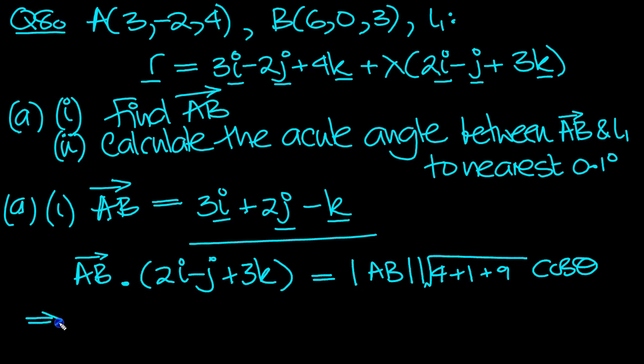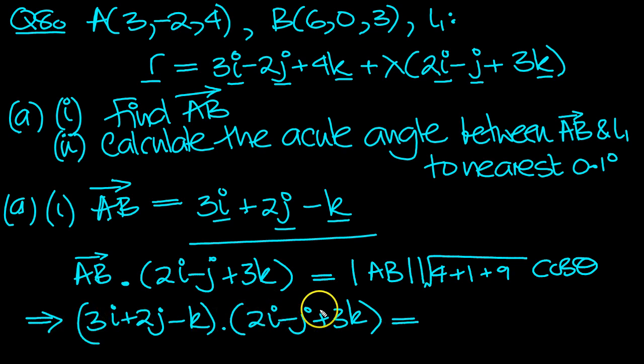So that tells us then that AB dot this, well AB is equal to 3i + 2j - k dot 2i - j + 3k. Let's work out this value first then. 3 times 2 is 6, 2 times -1 is -2, -1 times 3 is -3. 6 minus 5 is 1.